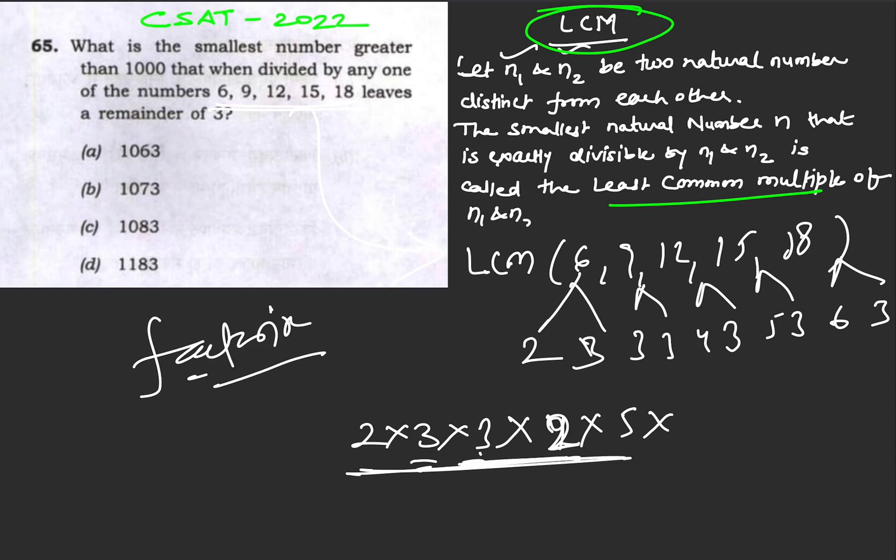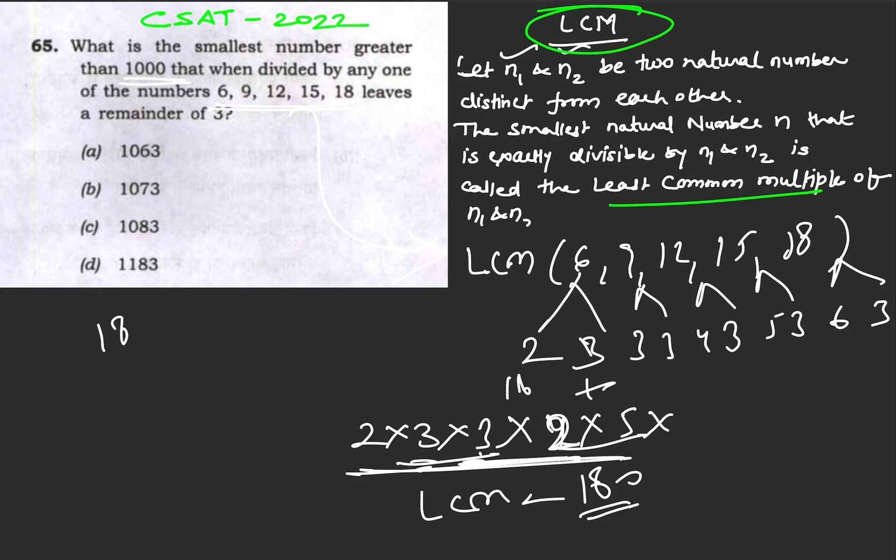So we have got the LCM as 180. Now we need to find the number which is greater than 1000 but the smallest such number.